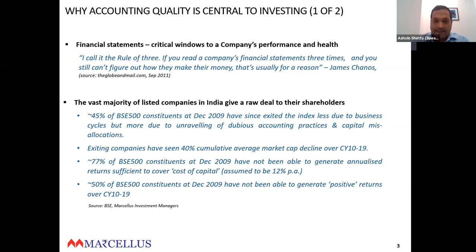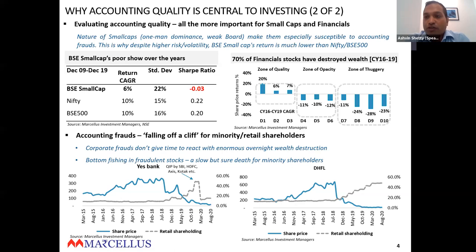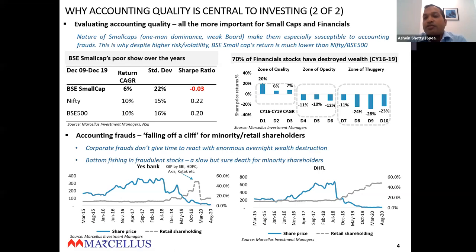Evaluating accounting quality becomes all the more important for small caps and financials. Small caps by nature are dominated by one person — the board of directors is not truly independent; it's filled with relatives and friends of the promoters. There is typically no professional management, so a one-man promoter makes key decisions. Given the absence of adequate oversight from a strong independent board or professional management, the tendency to engage in fraudulent practices goes undetected or unquestioned. Hence, we should be extra cautious about accounting quality in small caps.